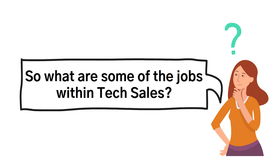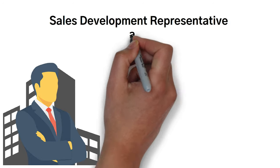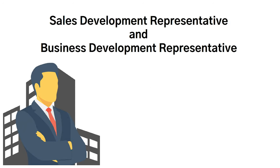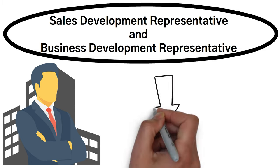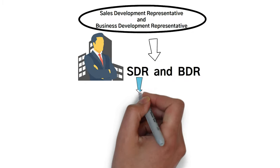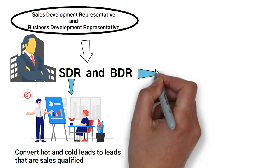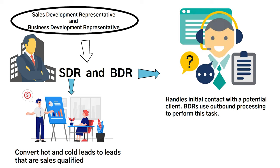So what are some of the jobs within tech sales? Well, I already mentioned two of the names for the entry-level jobs, and they're essentially the same thing. But at different companies, they might have slightly different job descriptions. For instance, sales development representative and business development representative are almost the same. These are also known as SDR and BDR. At some companies, SDRs might convert hot and cold leads to leads that are sales qualified. And at some companies, BDRs handle initial contact with potential clients, which basically means they outreach to people and collect leads.